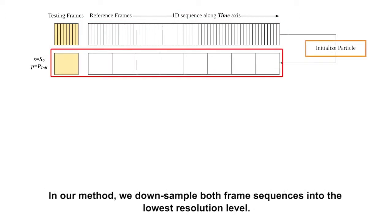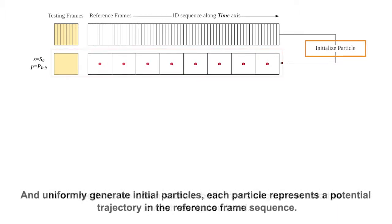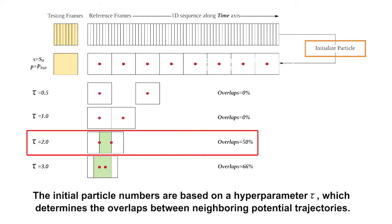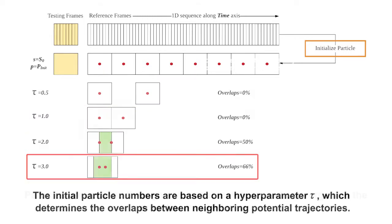In our method, we downsample both frame sequences into the lowest resolution level and uniformly generate the initial particles. Each particle represents a potential trajectory in the reference frame sequence. The initial particle numbers are based on the hyperparameter tau, which determines the overlaps between neighboring potential trajectories.